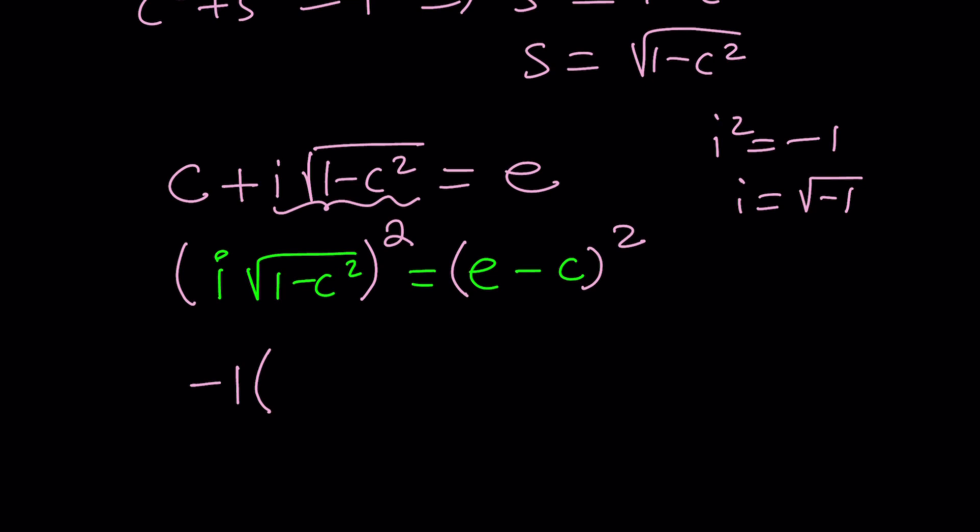i squared is negative one, then this will become one minus c squared. Notice that even if I go with the negative solution for sine z, when we square both sides it's still going to give me a positive solution, which explains why we get extraneous solutions from squaring both sides in radical equations.